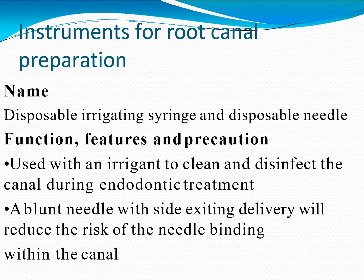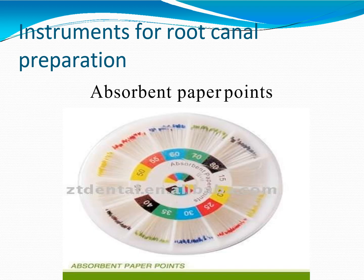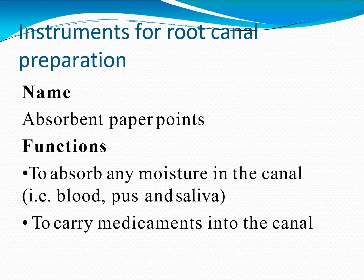The disposable irrigating syringe and disposable needle are used with an irrigant to clean and disinfect the canal during endodontic treatment. A blunt needle with side-exiting delivery reduces the risk of the needle binding within the canal. Absorbent paper points are used to absorb any moisture in the canal — including blood, pus, and saliva — and to carry medicaments into the canal.